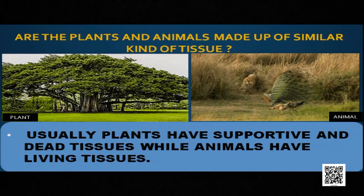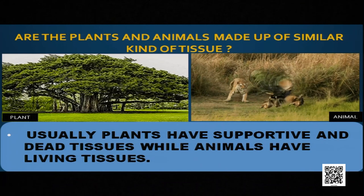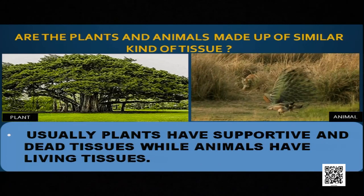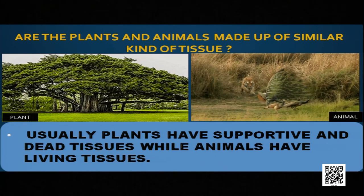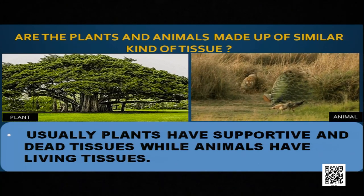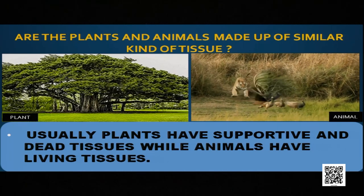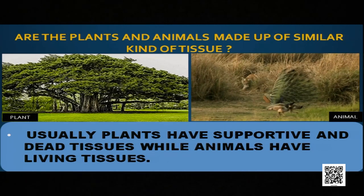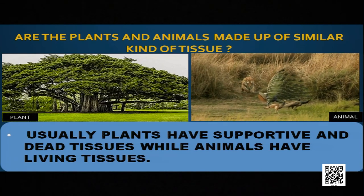Usually plants have supportive and dead tissues. Since plants are fixed and cannot move, they need more support. That is why a plant has usually 80% dead tissues. But animals move from one place to another, and most of their tissues are living, though some are dead. For example, in our body only the nail tissue and hair tissue are dead. This is the first difference between plant tissue and animal tissue.